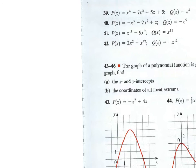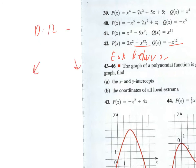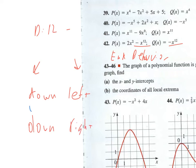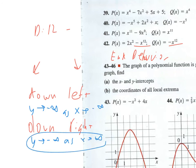Next up, number 42. We're just doing end behavior using infinities. This is a degree 12 negative, so it's down to the left and down to the right. Writing that in infinity notation: y goes to negative infinity on both sides. For the left side, x is negative infinity; for the right side, x is positive infinity.